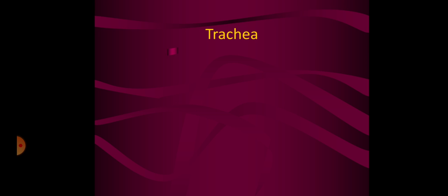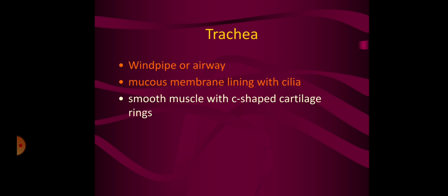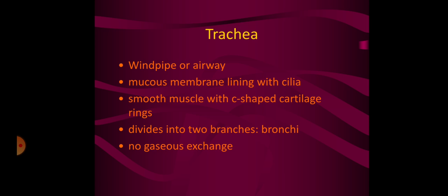The next structure is the trachea. The trachea is also known as the windpipe or airway. It has a mucous membrane lining with cilia and contains mucus. It is made of smooth muscles with C-shaped cartilage rings. It divides into two branches, the bronchi. In the trachea, there is no exchange of gases.